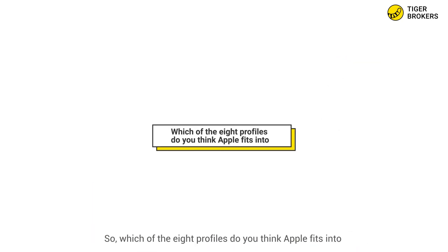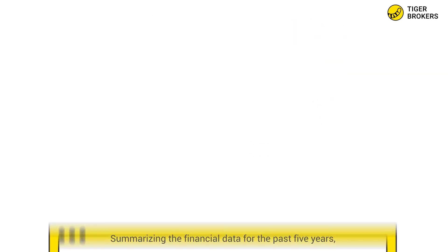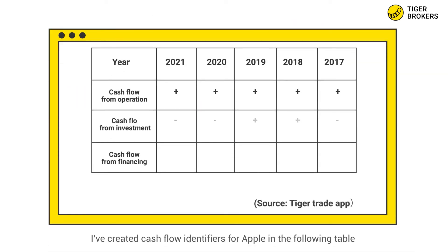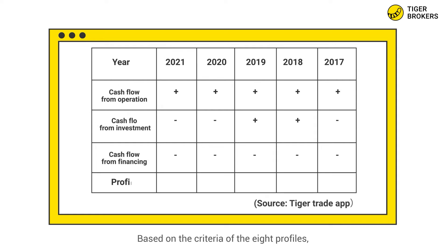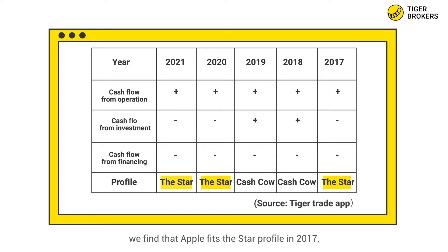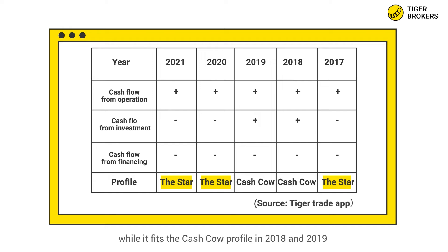So, which of the eight profiles do you think Apple fits into? Summarizing the financial data for the past five years, I've created cash flow identifiers for Apple in the following table. Based on the criteria of the eight profiles, I've assigned the profile type to Apple for each year. By comparing the profiles in different years, we found that Apple fits the star profile in 2017, 2020, and 2021, while it fits the cash cow profile in 2018 and 2019. Given this data, we can draw the following conclusions.